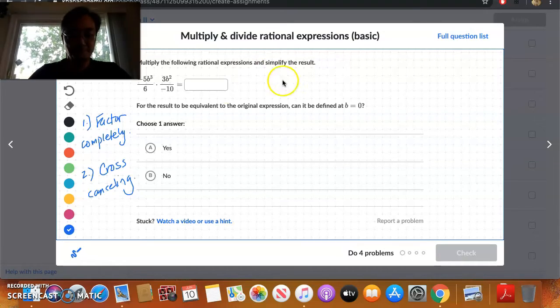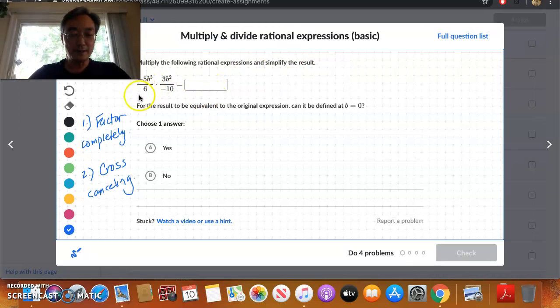And now, let's see. Since all of the terms are monomials, there's nothing really to factor. So now we can just go right into cross-canceling. I'm going to recopy this. b cubed over 6 times x times 3b squared over negative 10. Okay? Now we see here that 5 and 6 do not have any common factors, neither does 3 and 10.